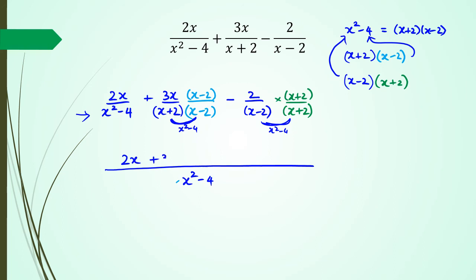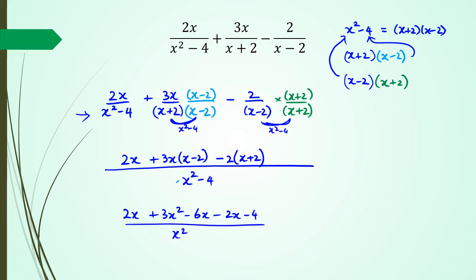So looking at the numerators, we've got 2x plus 3x times (x minus 2) minus 2 times (x plus 2). Expanding: 2x plus 3x squared minus 6x minus 2x minus 4, all divided by x squared minus 4. Simplifying: 3x squared minus 6x plus 2x minus 2x is 0, minus 4 — giving 3x squared minus 6x minus 4, divided by x squared minus 4. And that's how you do addition and subtraction of algebraic fractions dealing with quadratics.